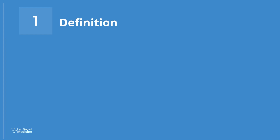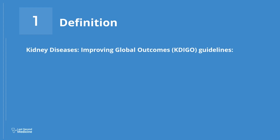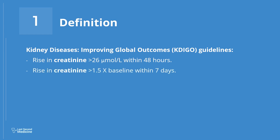Number 1: Definition. The Kidney Disease Improving Global Outcomes (KDIGO) guidelines define acute kidney injury as: a greater than 26 micromole per liter rise in creatinine within 48 hours; a more than 1.5 times rise in creatinine from baseline within 7 days; or urine output less than 0.5 milliliters per kg per hour for more than 6 consecutive hours.